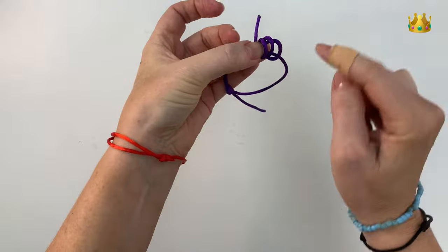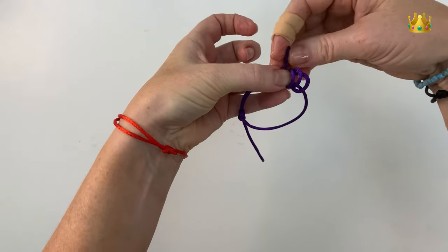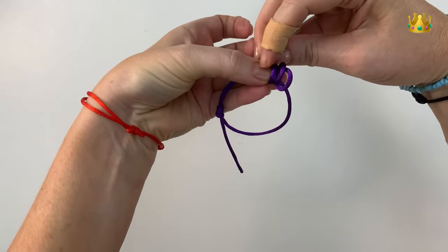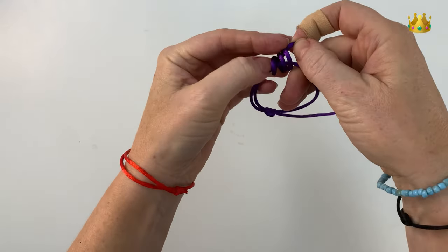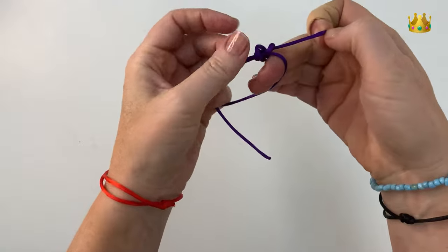Then we've got our three little loops here so we can gently bring our tail end around and poke it down all three of our loops, pulling it out the right hand side and then pulling our knot down nice and tight.